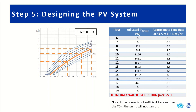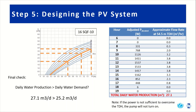The final question is: does total daily water production exceed or meet our design demand? Checking, we see that 27.1 cubic meters per day is greater than 25.2 cubic meters per day, our design demand — so we've met it. If it had not met our daily water demand, it would simply be an iterative process of trying different PV system arrangements of panels in series and parallel until achieving sufficient water production.